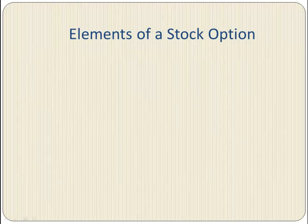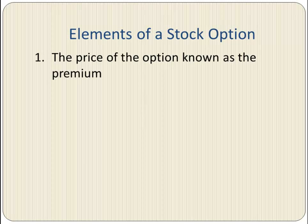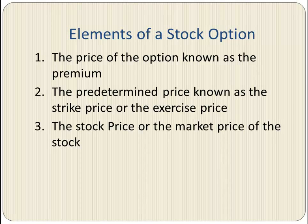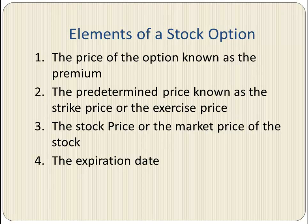Let's take a look at some important elements or aspects of a stock option. The price of the option is the first one — it's also known as the premium. This is the price that the buyer of the option must pay to the seller. The second one is the predetermined price, known as the strike price or the exercise price. The third one is the stock price or the market price of the stock. And finally, the expiration date. If the buyer does not exercise the option before the expiration date, the buyer loses the premium and the seller keeps the premium.